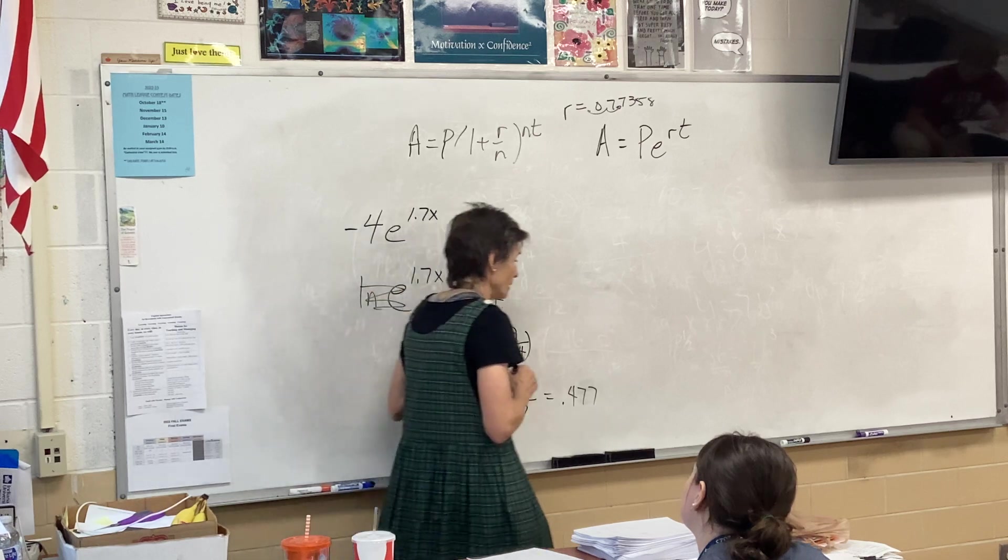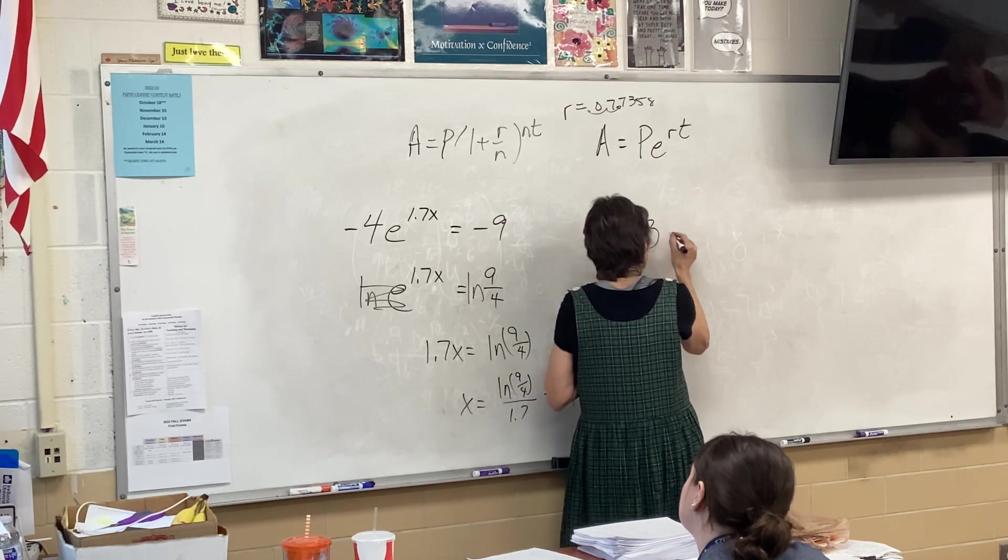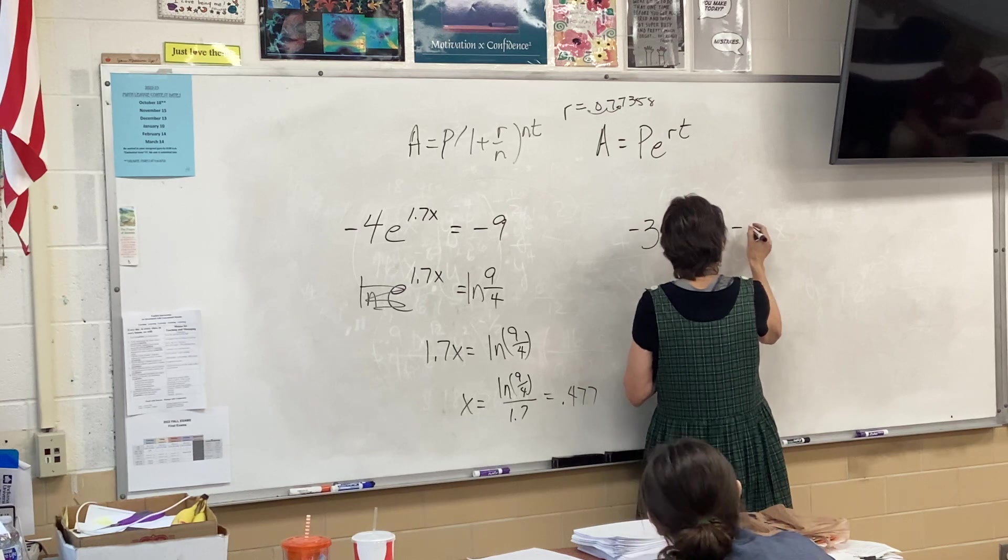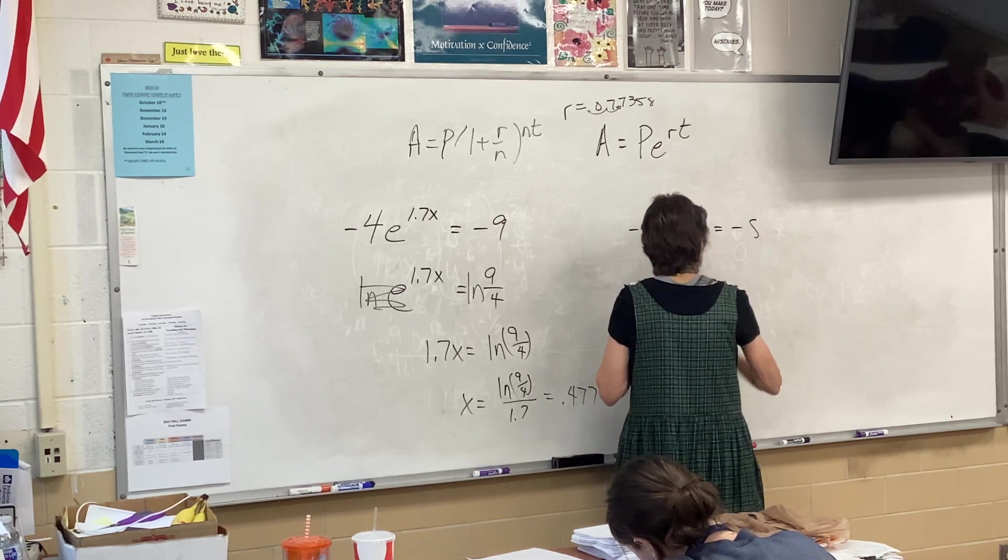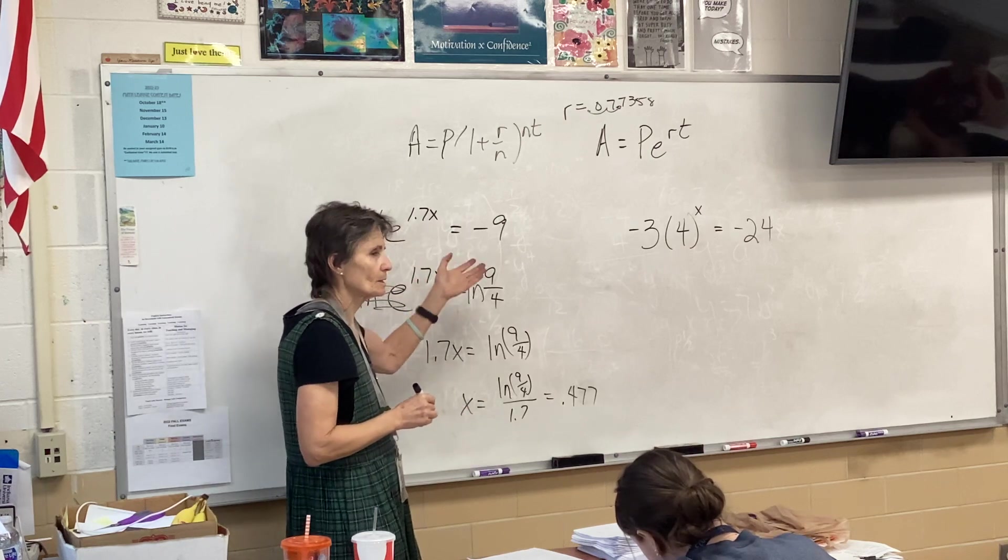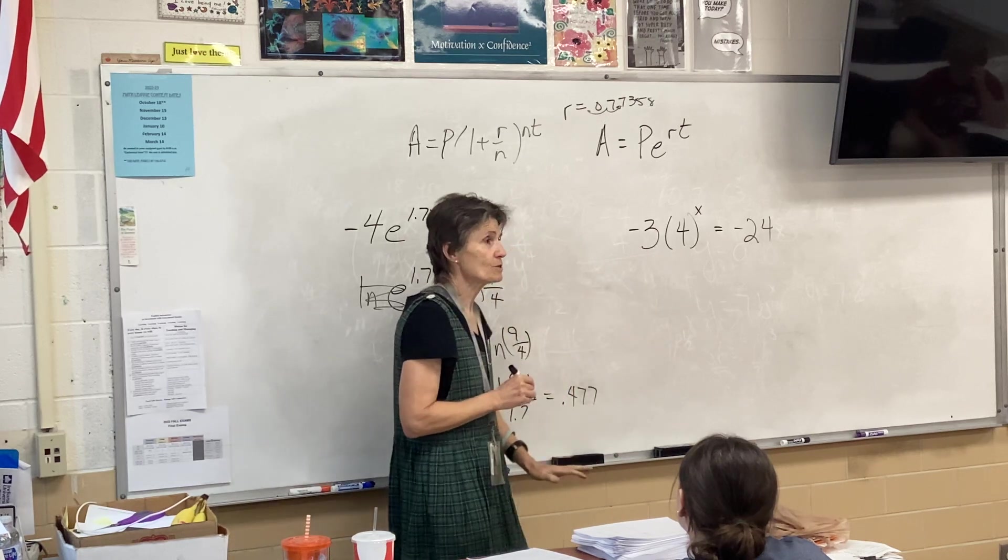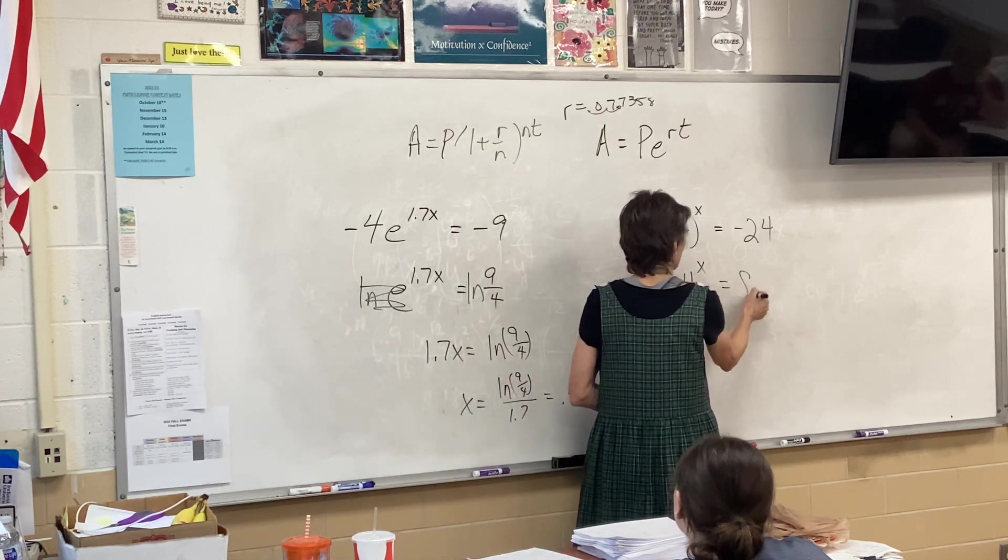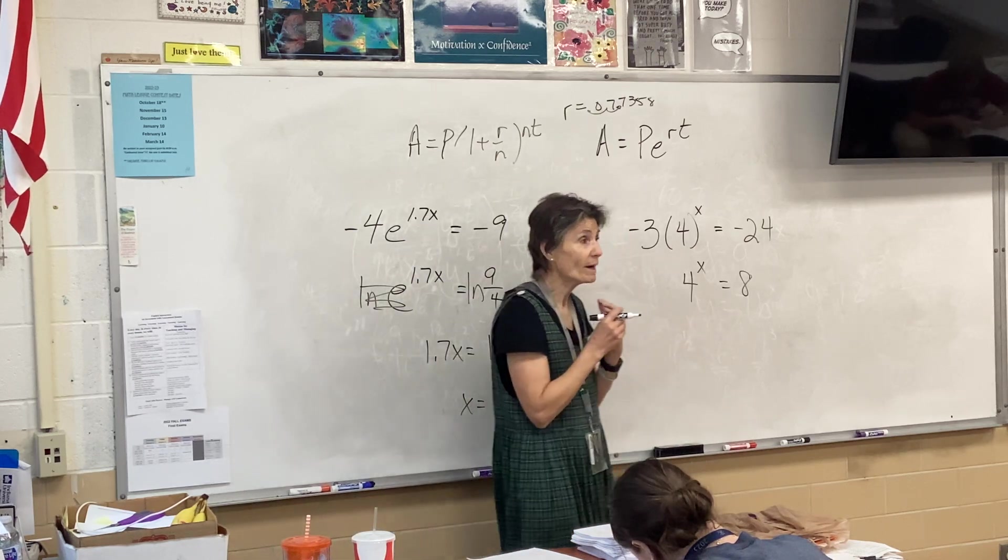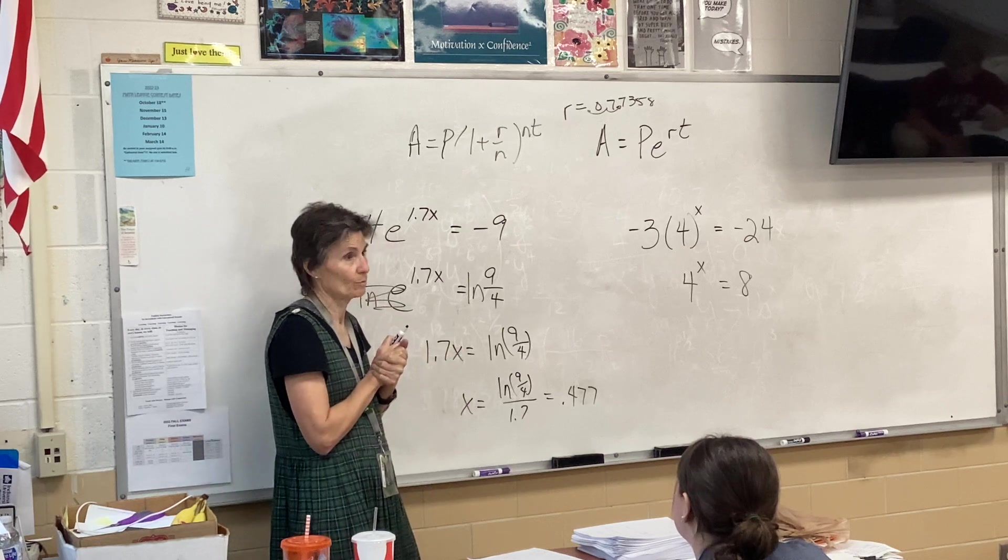Now, there is a very similar problem on the no calculator part. Something that looks like this maybe. Negative 3 times 4 to the x equals negative 24. So it's a very similar looking problem. But now I have no calculator. Okay, so what am I going to do first? Same thing as before. So 4 to the x equals 8. Now, if I had a calculator, I could log both sides and get my answer. What do I need to do if I'm solving that problem without a calculator? No logarithms, in other words. What do I need to do?